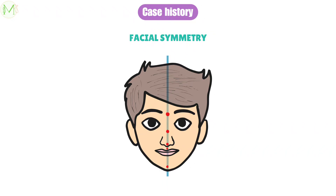Transverse facial asymmetry may result in tilting of the occlusal plane. Another method is the bird's-eye view, where we ask the patient to extend the neck back and visualize the face from the chin region. The midpoint of the chin, tip of the nose, nasion and glabella will all fall in one line.